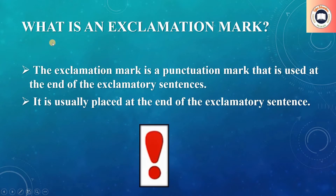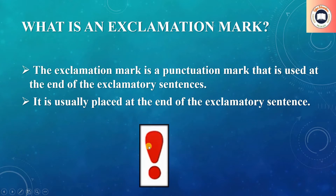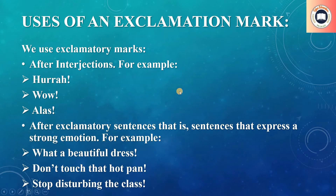So to begin with, let's see what is an exclamation mark. The exclamation mark is a punctuation mark that is placed at the end of exclamatory sentences. The exclamation mark looks like a vertical line with a spherical dot at the bottom of the vertical line.